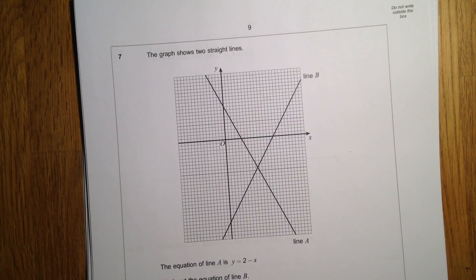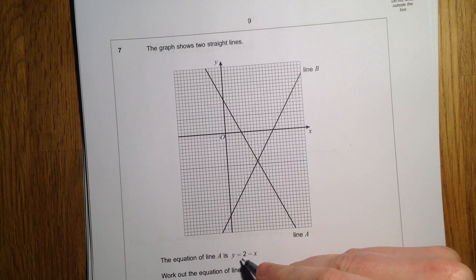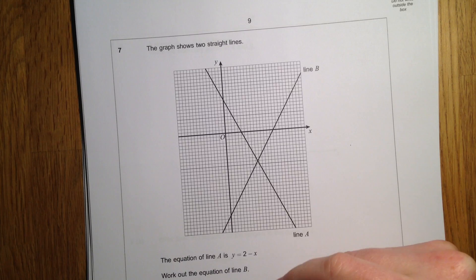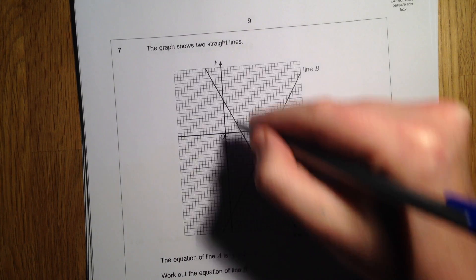So this question is about understanding the equation of a line. This equation A is y equals 2 take away x. This thing here is the y-intercept, or it's the value when x is 0.